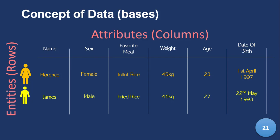Florence and James — those are the two entities. That is the basic fundamental concept of a database. Every single database talks about entities and their attributes — you cannot have one without the other. The minimum a database will have is one entity and one attribute. So if you just have the name Florence, that's data. Add James, and you have one attribute for two entities.